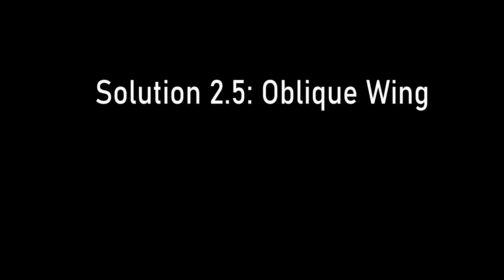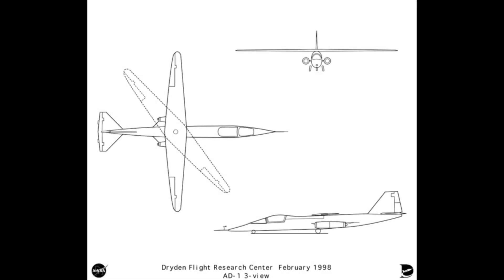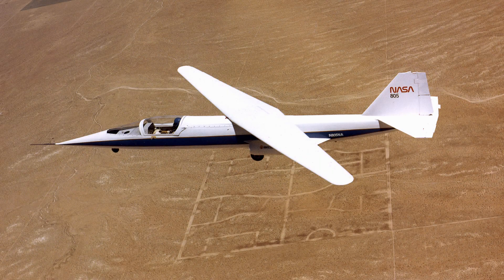Solution 2.5: Oblique Wing. An interesting variation on the variable sweep wing is the oblique wing, which promises to address the aforementioned concerns. This wing is mounted on a central pivot about which it rotates to various sweep angles. The interesting characteristic about this design is that one side will sweep forward and the other backwards, because the wing itself is one piece. This design is said to greatly reduce the complexity and maintain a constant center of lift as the wing is swept. The most notable implementation of this concept was the NASA AD-1, designed by Burt Rutan. This aircraft was shown to be capable of sweeping its wing from 0 to 60 degrees, and the associated test program lasted between 1979 and 1982. Other concepts include the Northrop Grumman Switchblade.